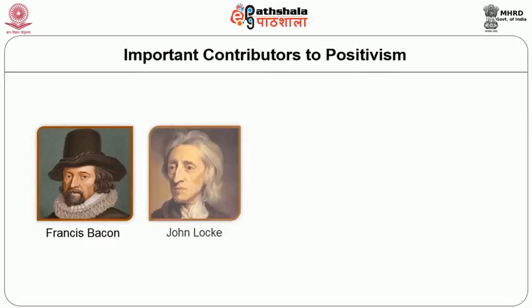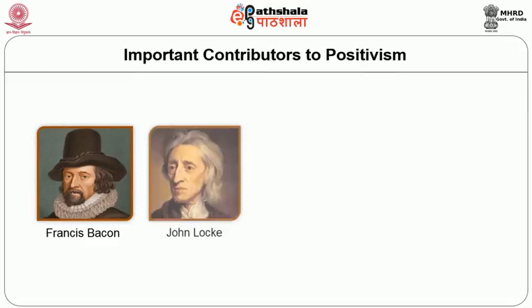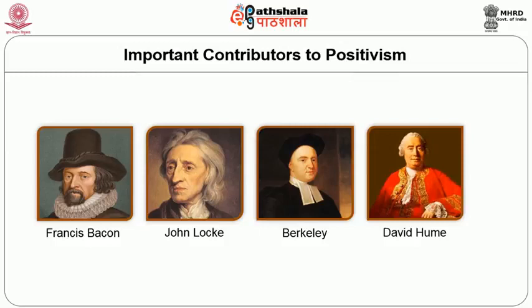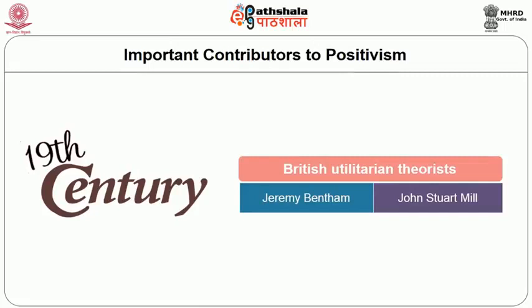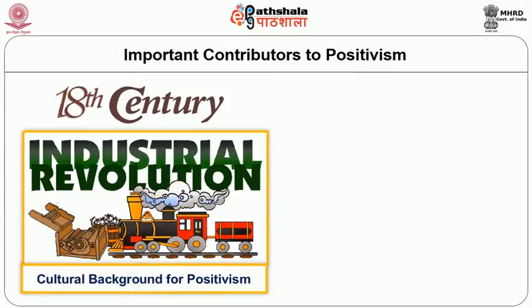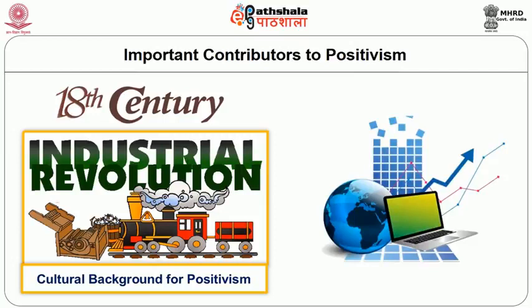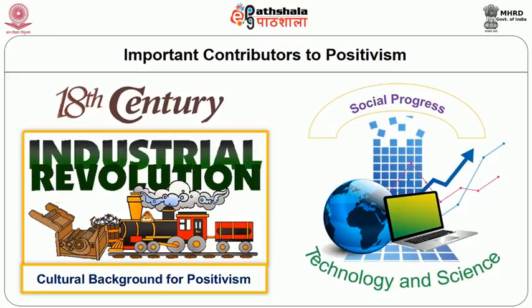Important contributors to Positivism: Positivism finds its roots in the work of British philosopher Francis Bacon and other British empiricists John Locke, Berkeley, and especially David Hume. In the 19th century, the British utilitarian theorists Jeremy Bentham and John Stuart Mill also espoused Positivism. The Industrial Revolution of the 18th century can be considered as the cultural background for Positivism, after which the accompanying optimism that technology and science would bring about social progress made science and the method of science the source of genuine knowledge.